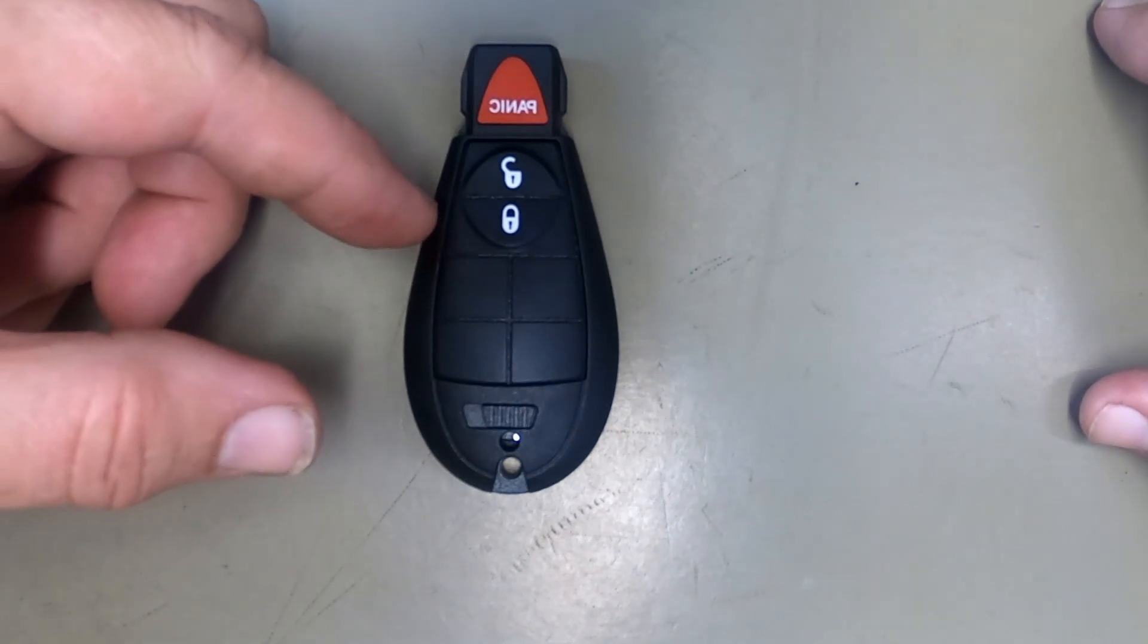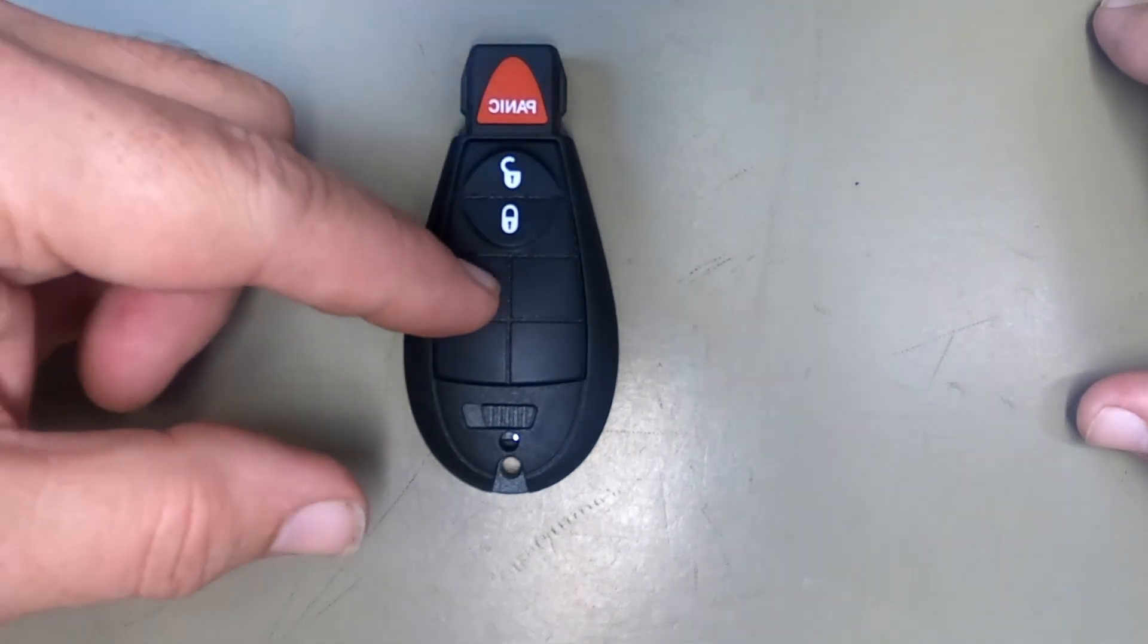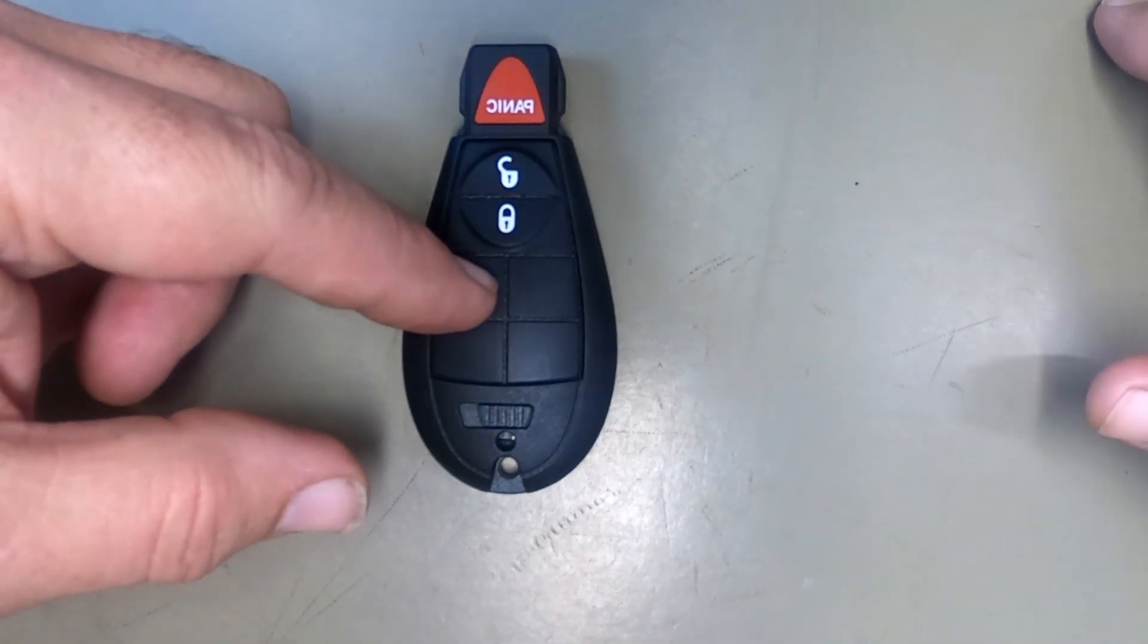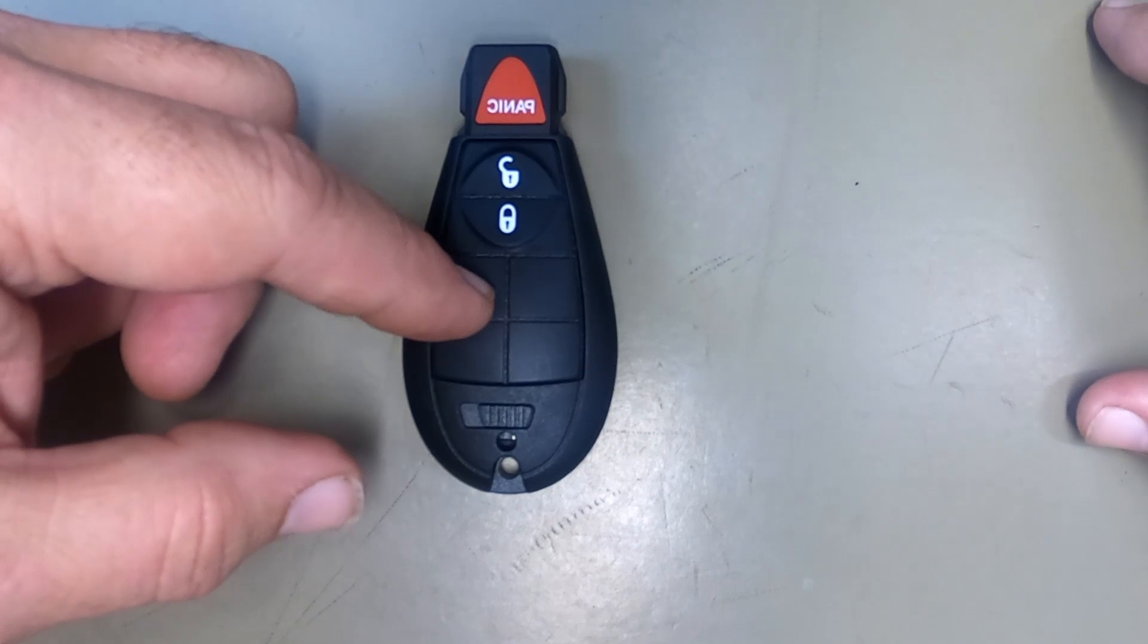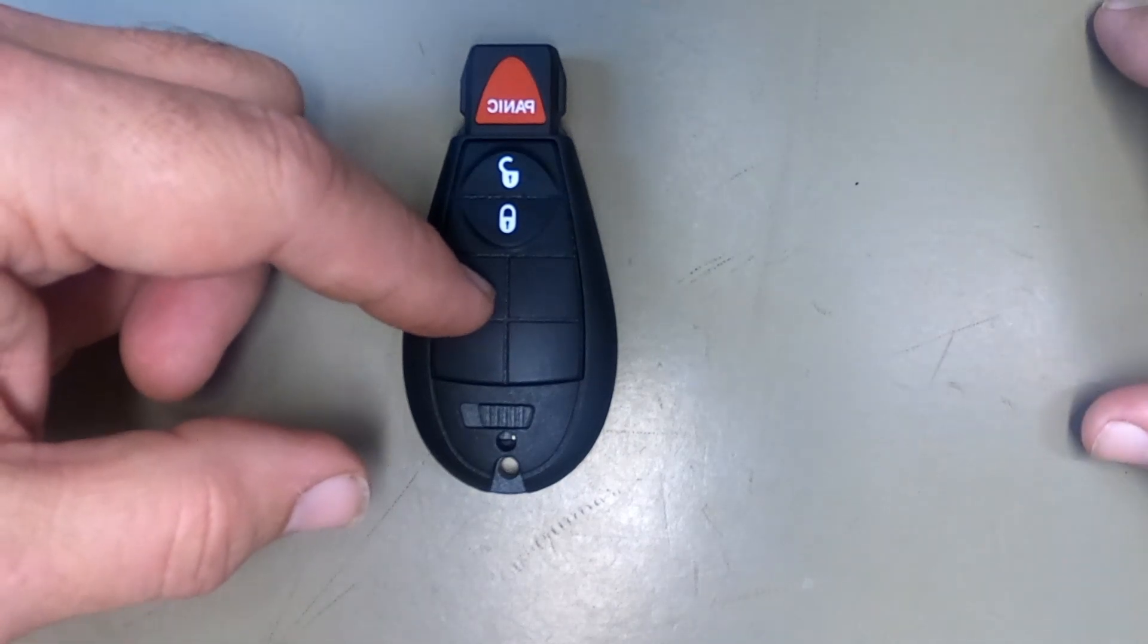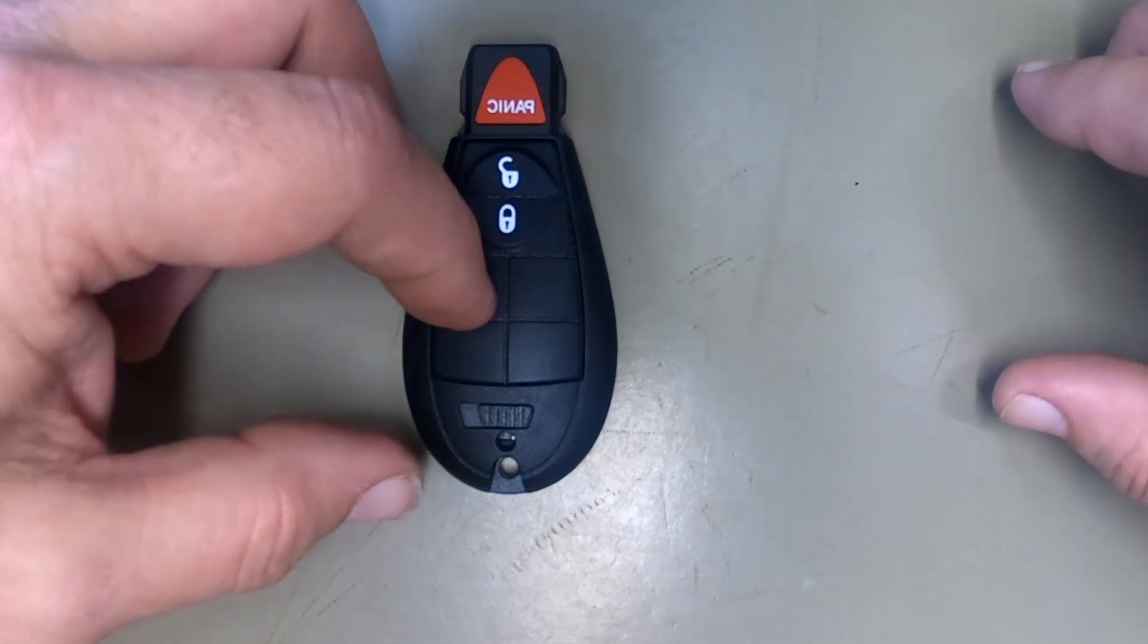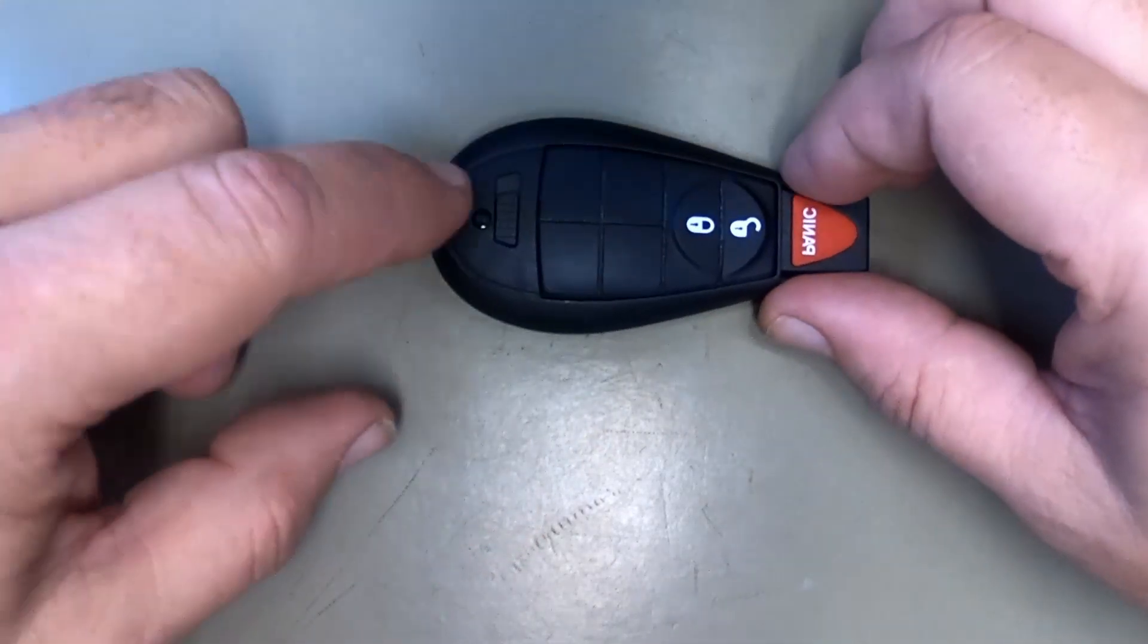We're going to change the battery out. You might be changing it because you notice your remote's not working all the time. You have to get closer to the vehicle, hold the button down. Please make sure that your battery is good. We've seen them come from the manufacturer bad. If you get it online, whatever big box store you get it from, that being said...